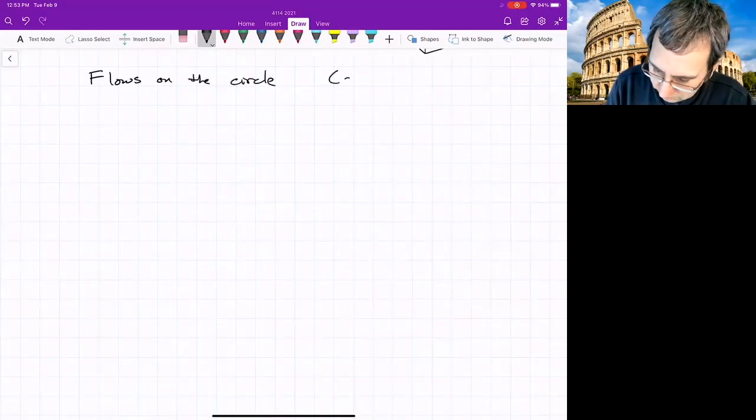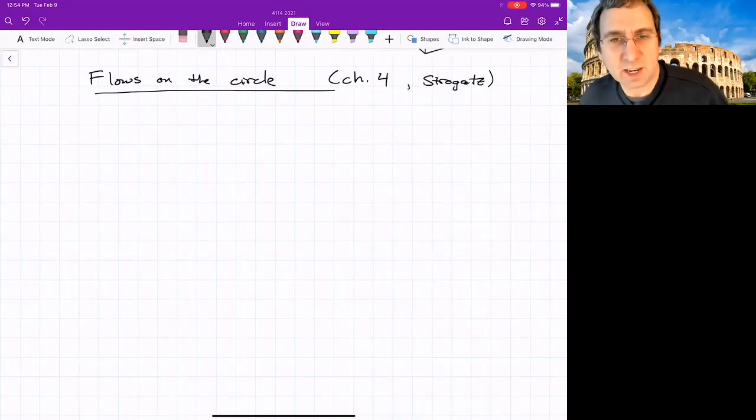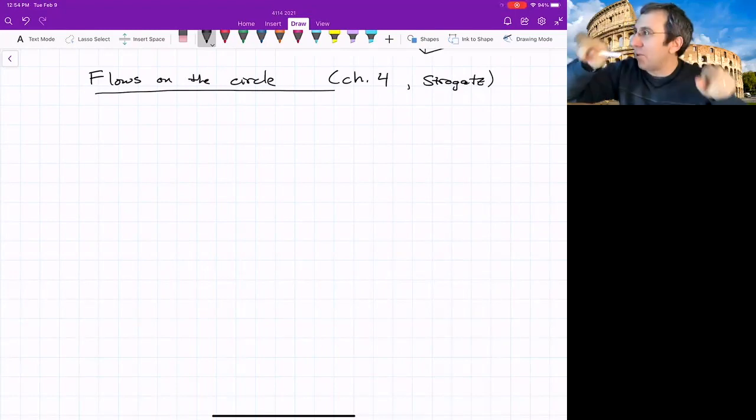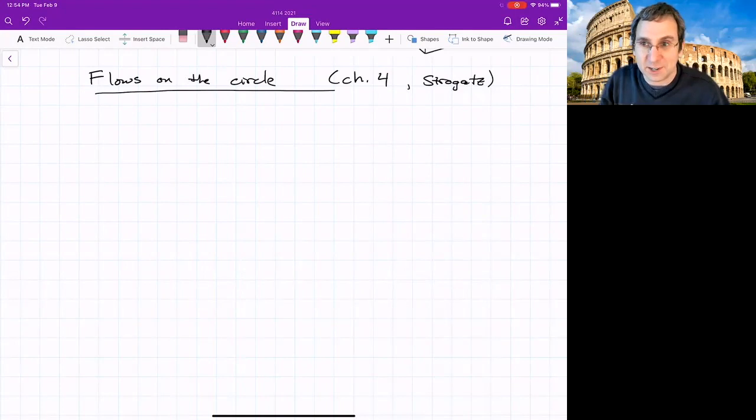Flows on the circle. This is chapter four, Strogatz. Before we were looking at flows on the line. For the case of the bead on the rotating hoop, we actually were looking at a flow on the circle because our variable was a point on the circle.